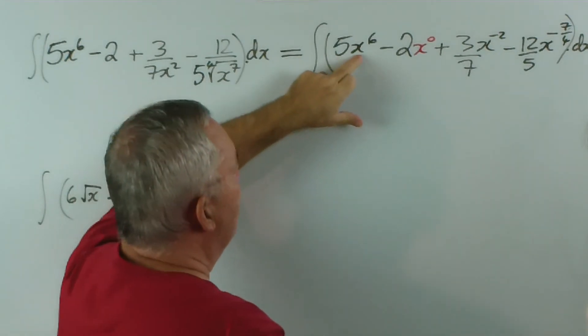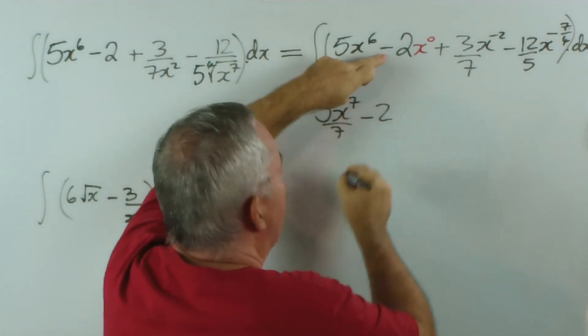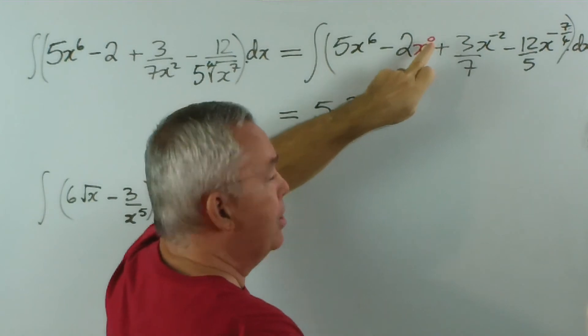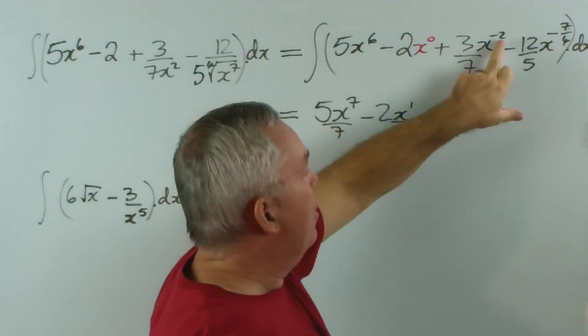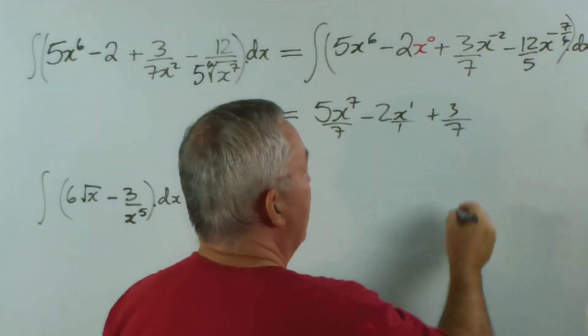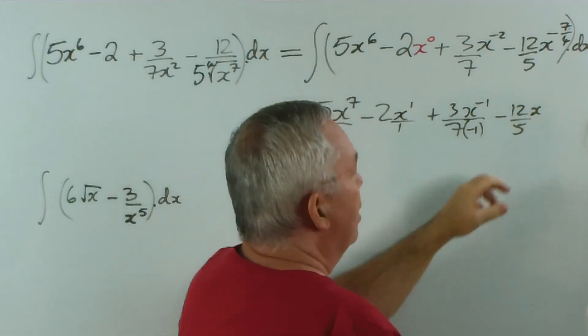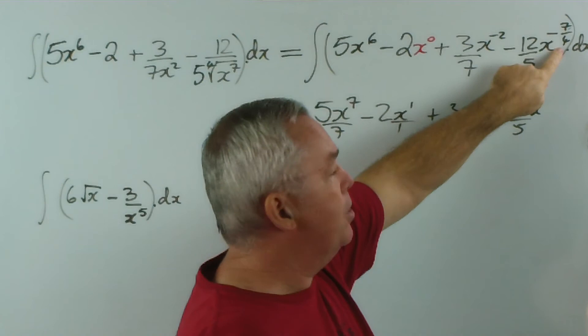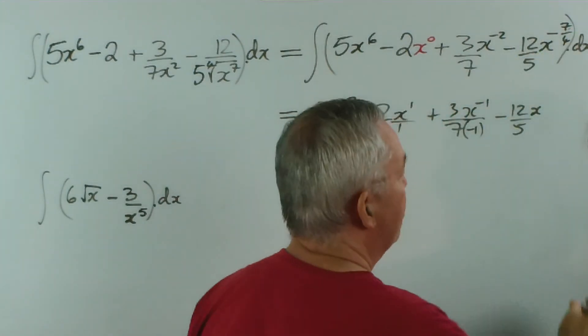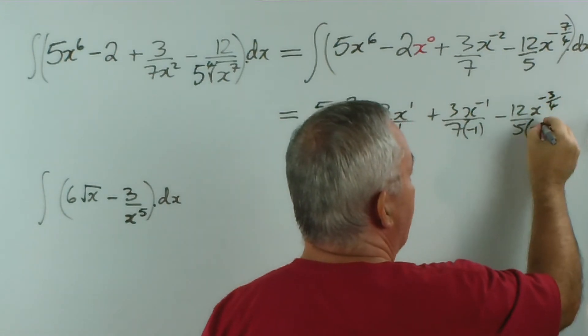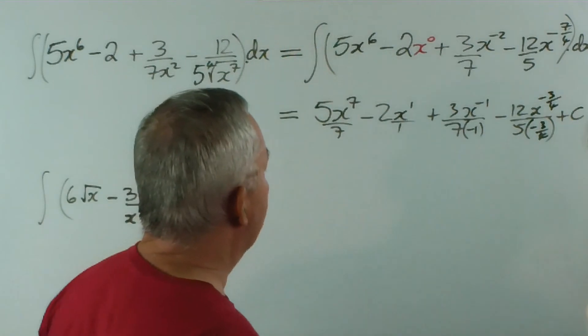Next step: we can actually perform the integral now, the integration. First one: we have five as a coefficient. We increase the power by one, so we get x to the seven on seven. This one: minus two is the coefficient, increase the power by one, so add one to zero, we get x to the one on one. Plus three on seven, increase the power by one, so we add one to minus two, so it comes up to minus one on minus one. Minus twelve on five. Now here we've got minus seven on four, so we're talking in terms of quarters, so to come up by one, we've got to increase by four quarters, so we've got to go from minus seven quarters up four to minus three quarters, and of course that means we've got minus three quarters down the bottom as well. Plus c, because it's an indefinite integral—we don't have limits or bounds at the moment.